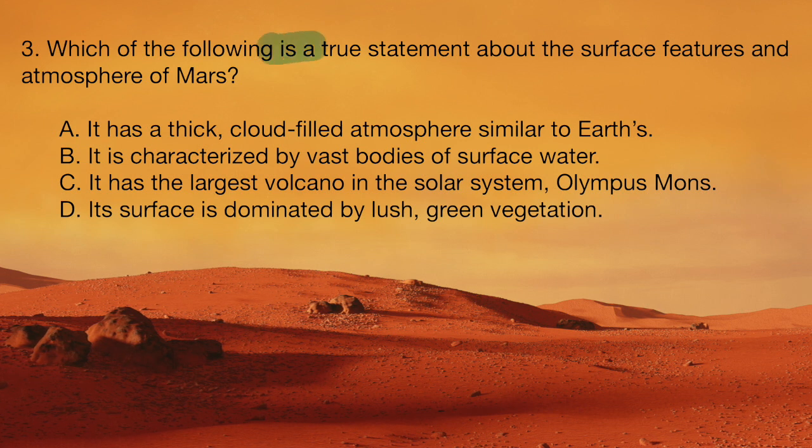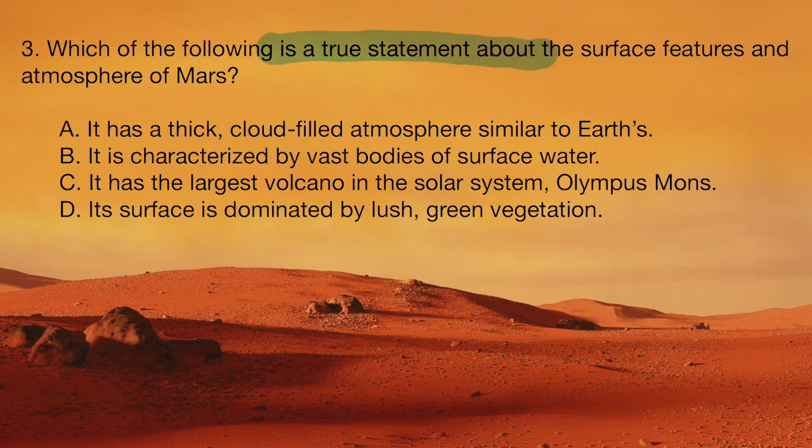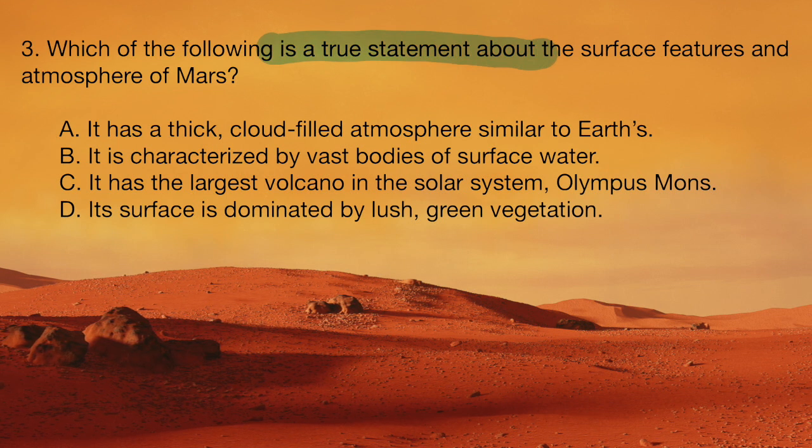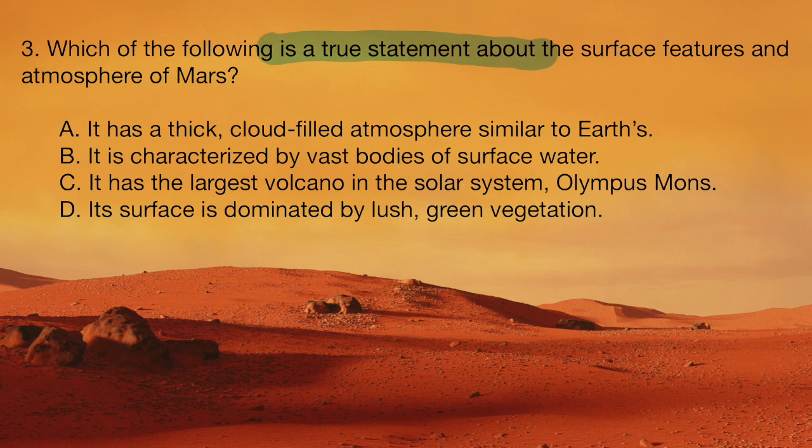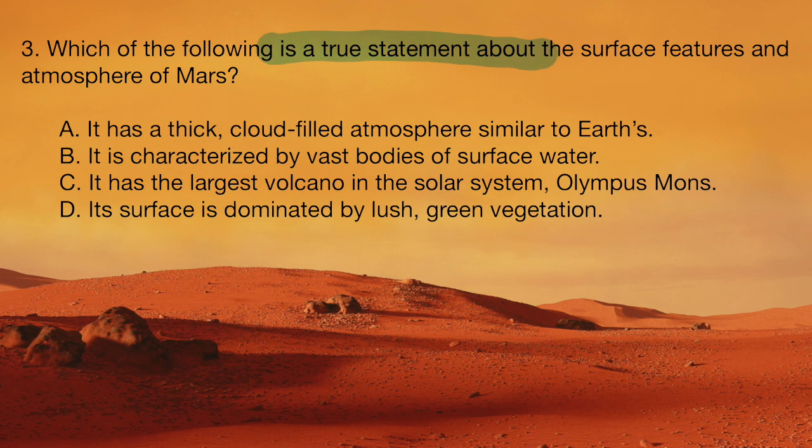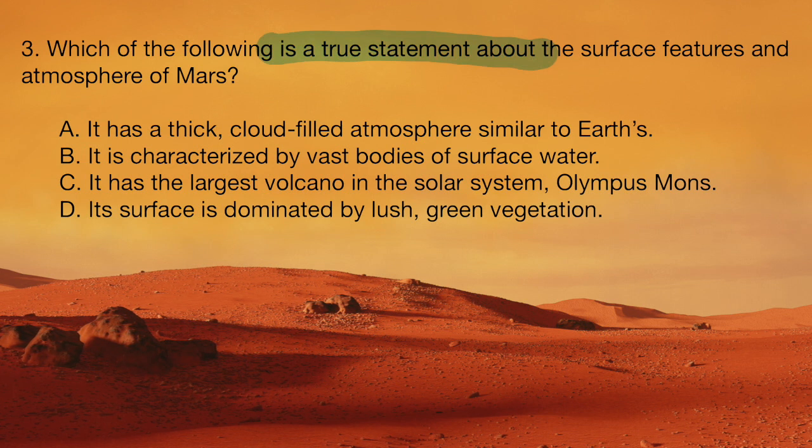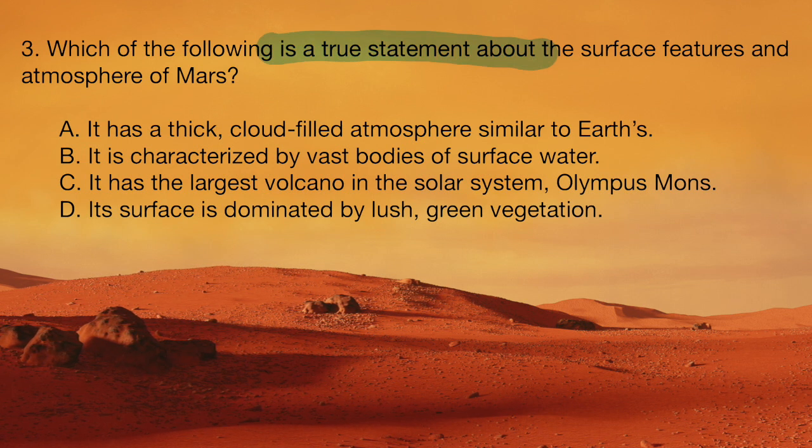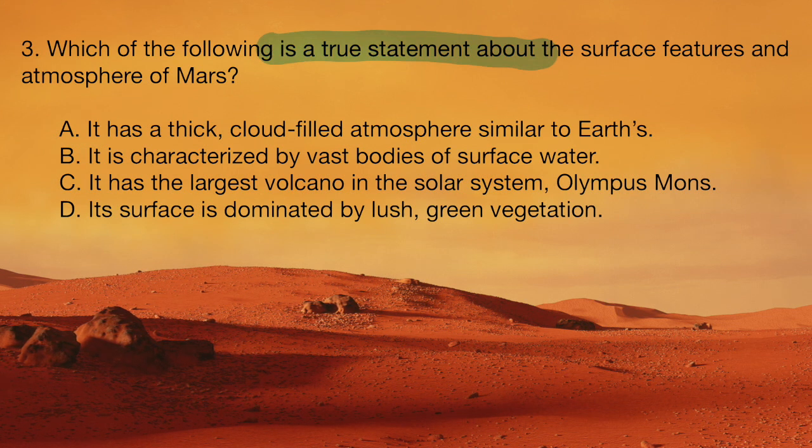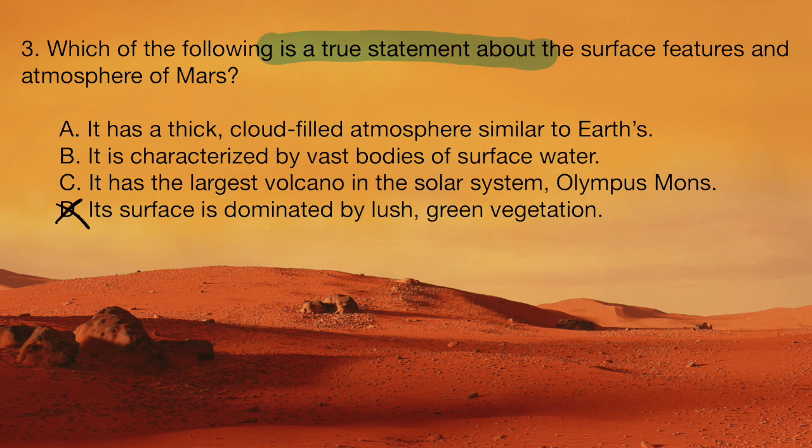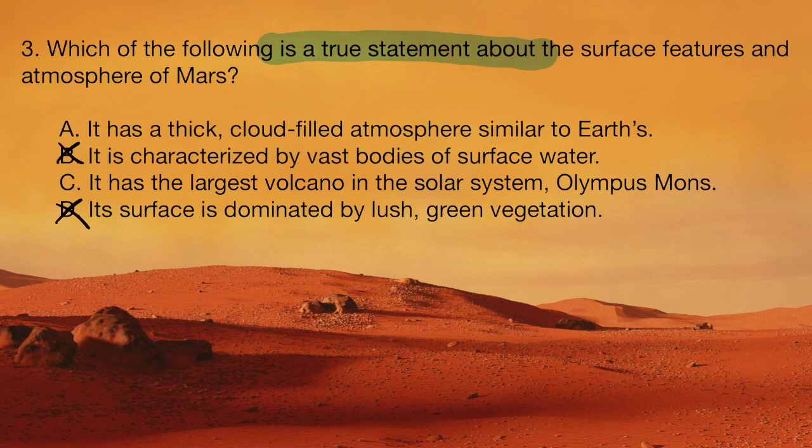And so we are looking for a true statement about the surface features and atmosphere of Mars. So if you just think about Mars for a second, what is the first thing that probably comes to your head in terms of what Mars looks like? Probably what you're thinking is probably a kind of a deserted red planet. And so when we think of that, we know that D is not the answer. It does not have lush, green vegetation.